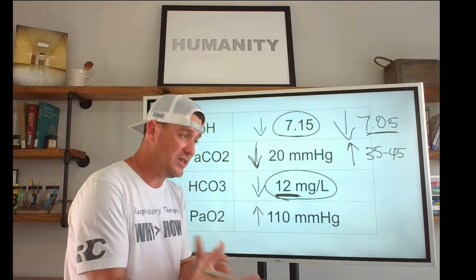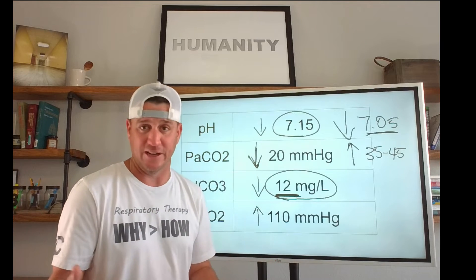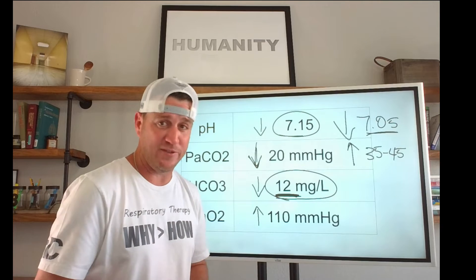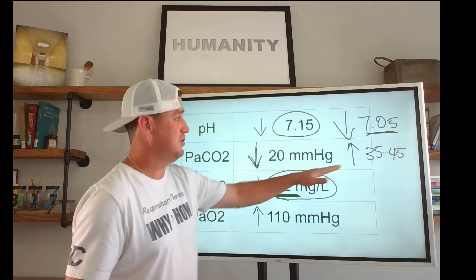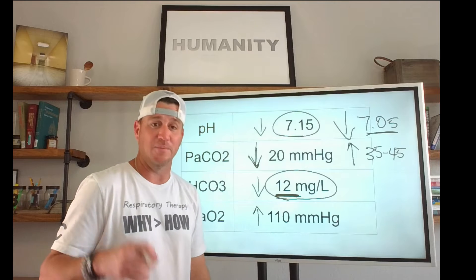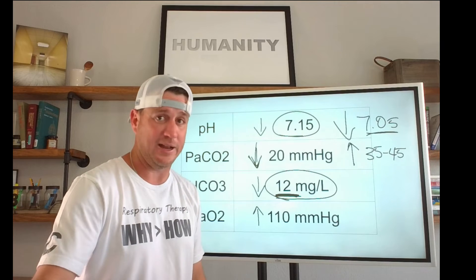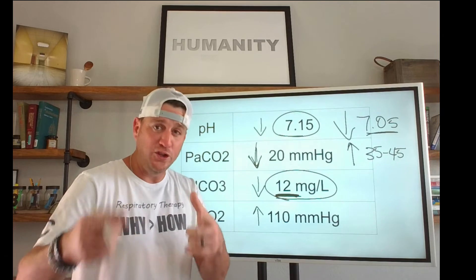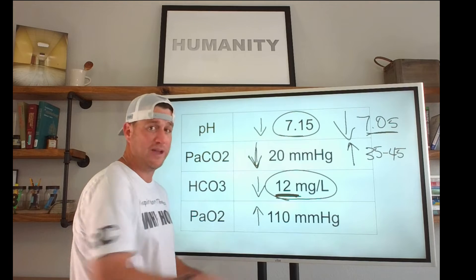Then you can start turning down the minute ventilation. But you don't want to go to a normal minute ventilation because that CO2 is going to rise, causing your pH to become even more acidotic. Remember, you are the compensator in this situation.